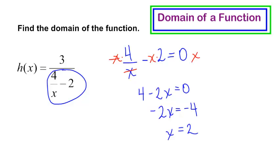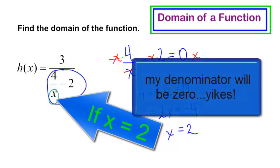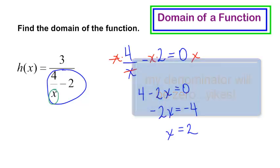If I plugged in 2 where this x is, I would have 4 divided by 2, that would be 2, and 2 minus 2, that would make my denominator equal zero. So we'll have to make sure that x does not equal 2.